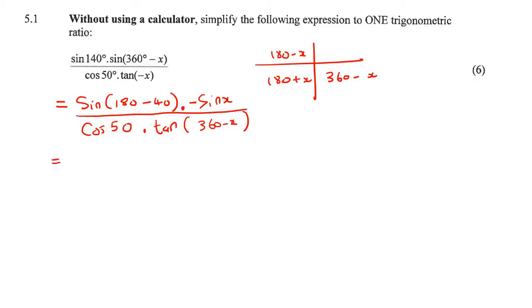Let me go one step further. This becomes sin 40°, because sin is positive in this quadrant, the 180° - quadrant. So it will be sin 40°, then -sin x, then cos 50°, and then -tan x. This becomes -tan x because tan is negative in that quadrant.